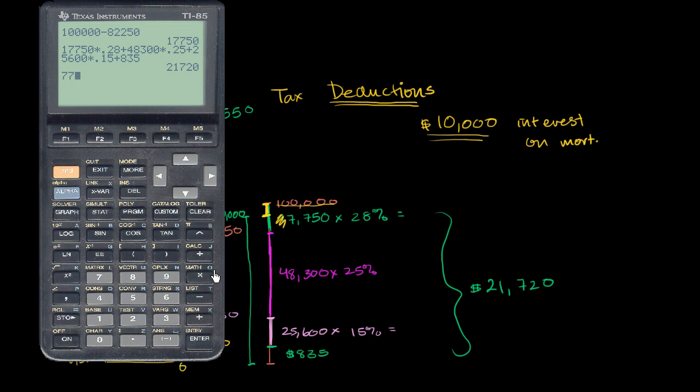We have $7,750 times 0.28 plus $48,300 times 0.25 plus $25,600 times 0.15 plus $835.